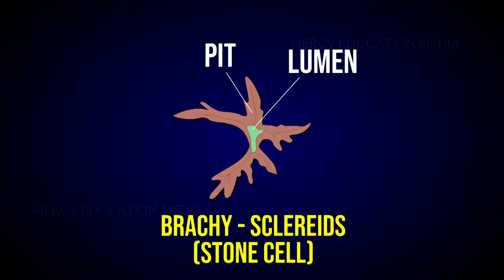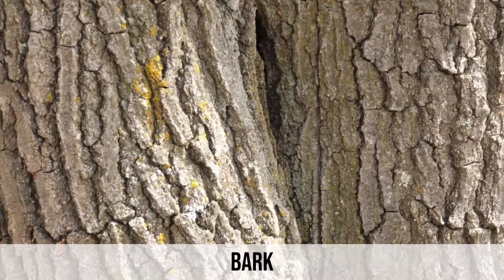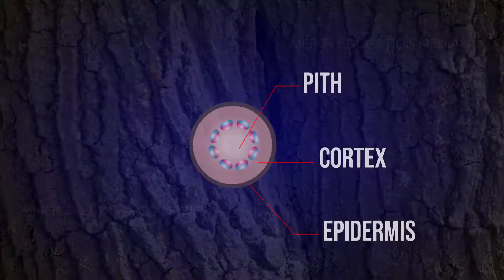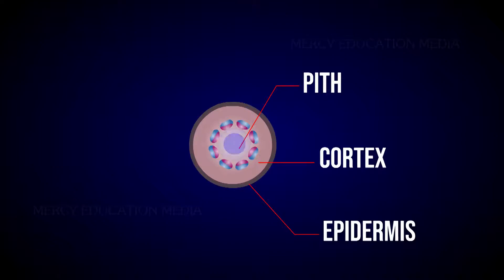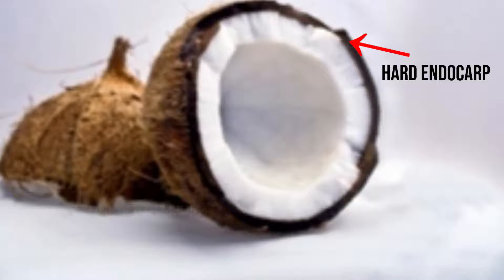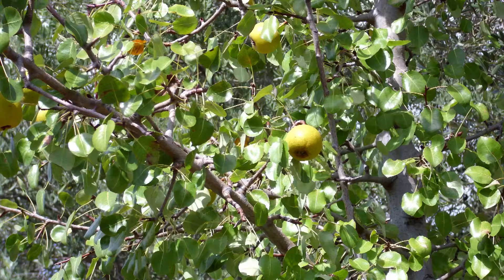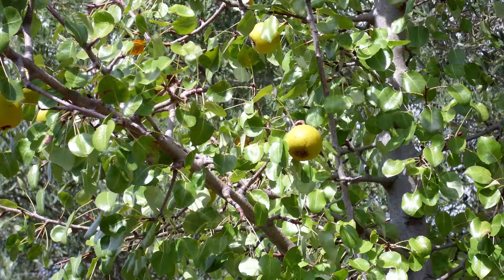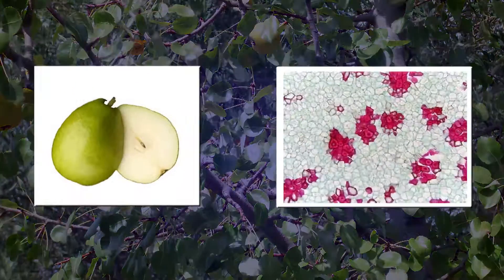The isodiametric scleroids are called brachyscleroids, that is, stone cells. They are found in bark, pith, cortex, hard endocarp, and fleshy portions of some fruits. Example: pulp of Pyrus.